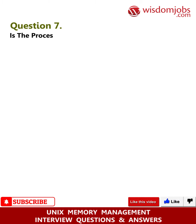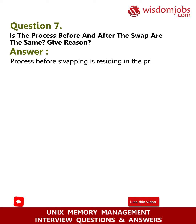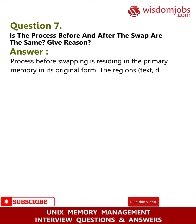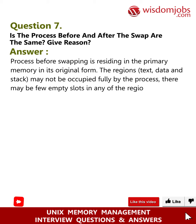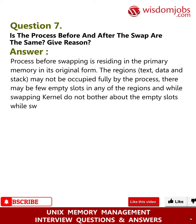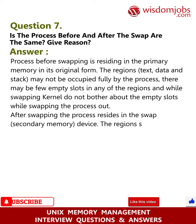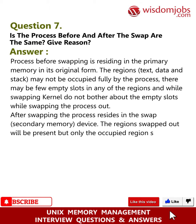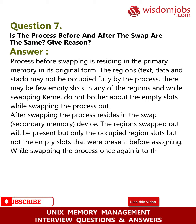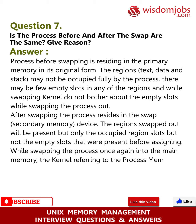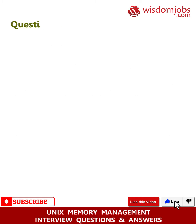Question 7: Is the process before and after the swap the same? Give reason. Answer: The process before swapping resides in primary memory in its original form. The regions — text, data, and stack — may not be fully occupied; there may be empty slots in any region, and while swapping, the kernel does not bother about the empty slots. After swapping, the process resides in the swap secondary memory device. The swapped-out regions contain only the occupied slots, not the empty slots. When swapping the process back into main memory, the kernel refers to the process memory map and assigns memory accordingly, accounting for the empty slots.